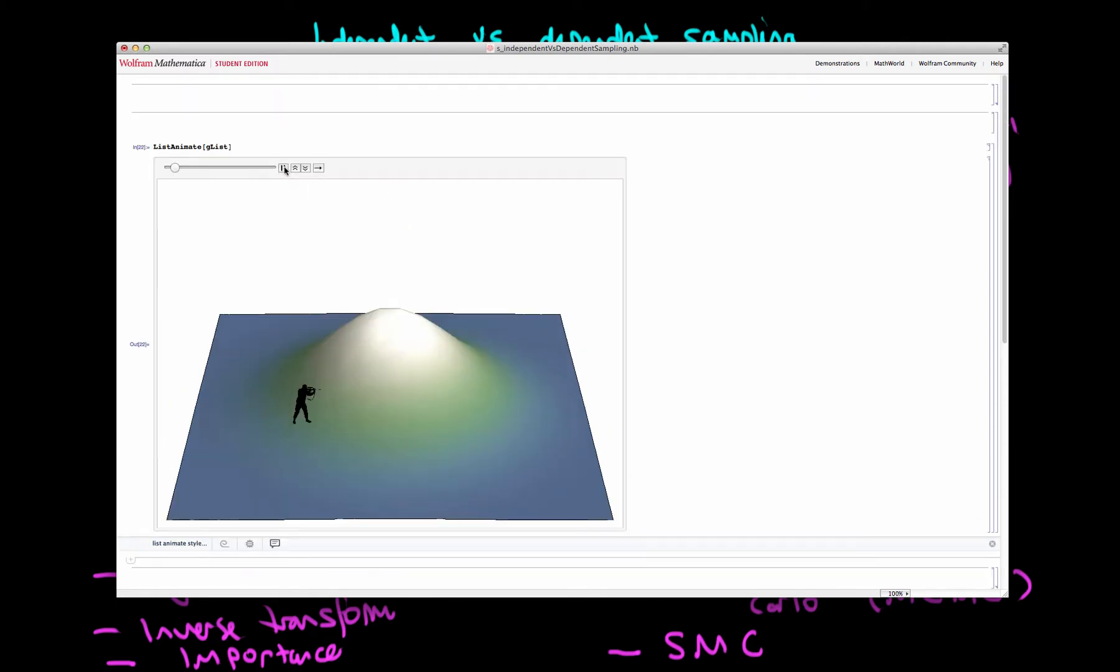We can contrast that with the dependent sampling case. In the dependent case, the soldiers move on foot, and because of that they move locally, which means that the amount of territory they cover per unit time is that much less than an independent sampler. It's a much less efficient way of covering terrain.